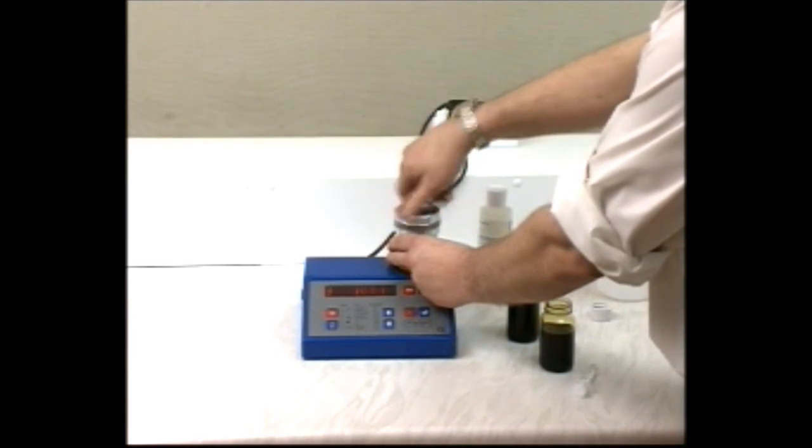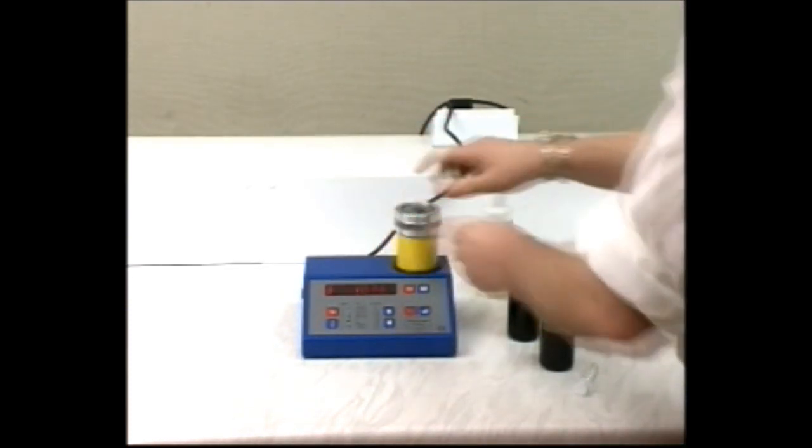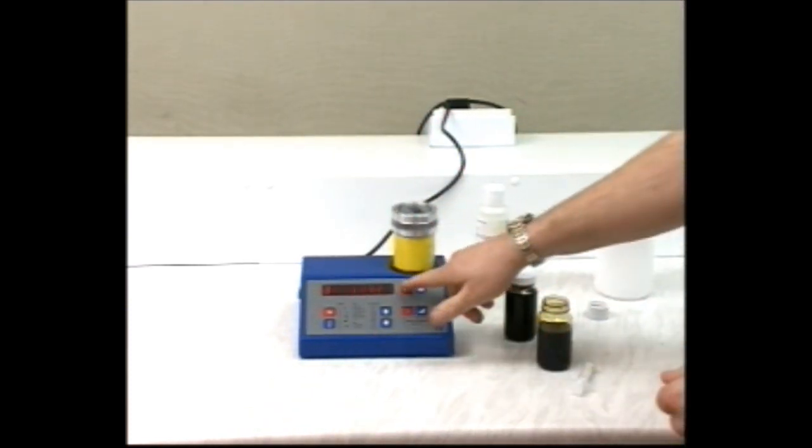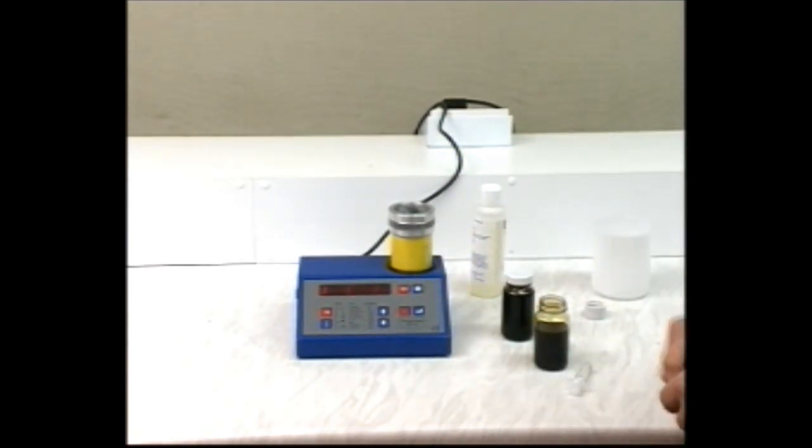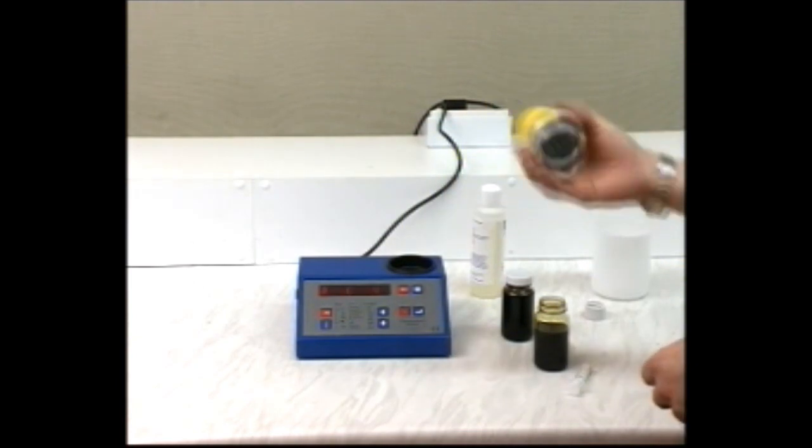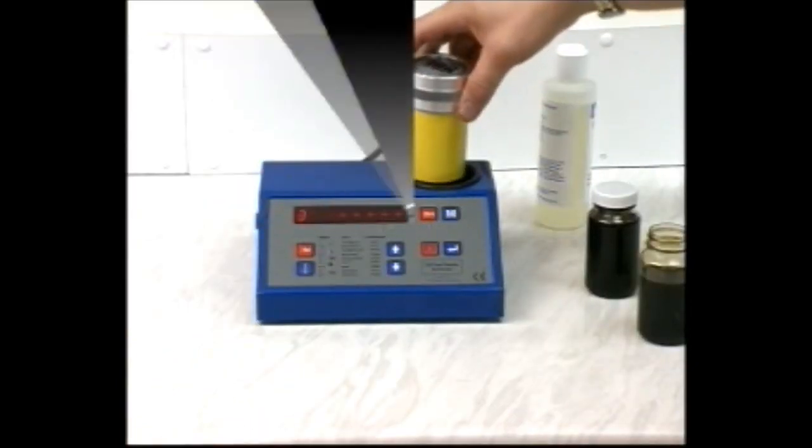When the reading is steady, press the button marked 0 to start. Remove the cell and shake it until the display reaches 120, then replace it on the unit. You must shake it vigorously or the test won't work.